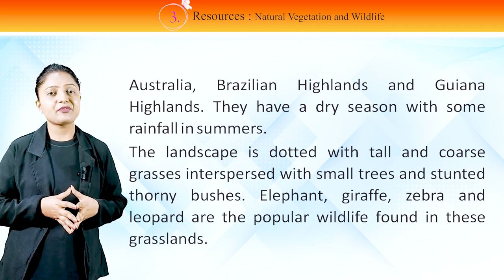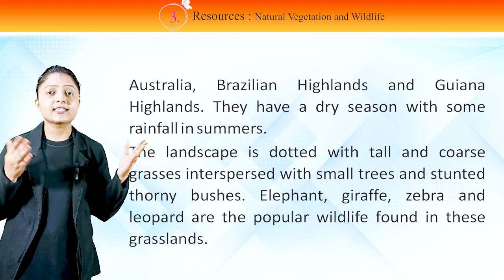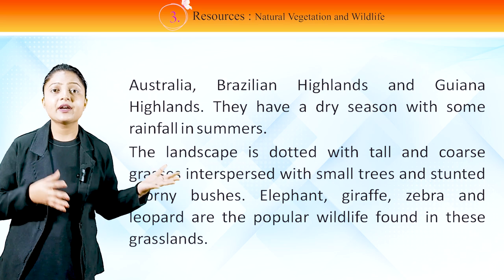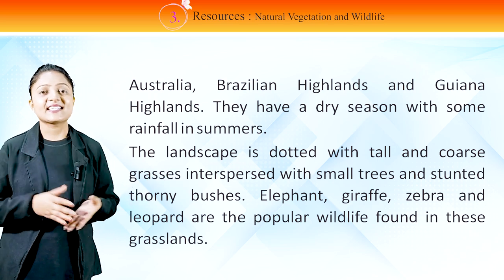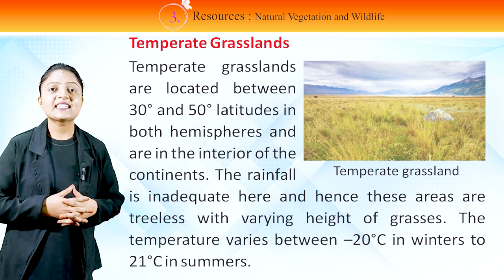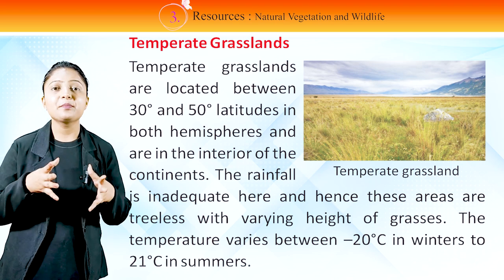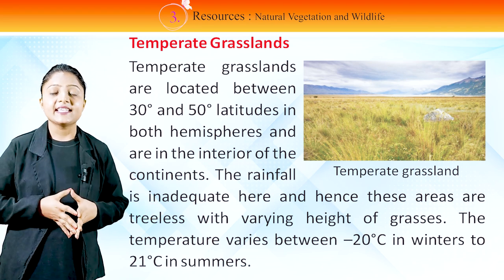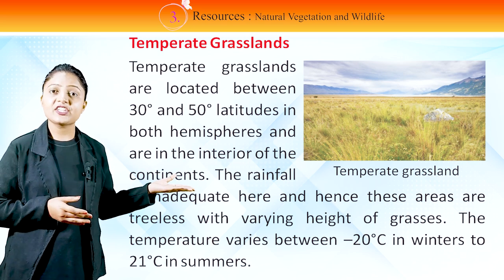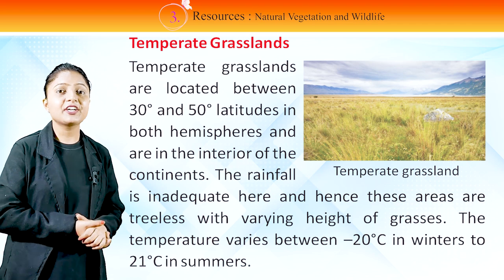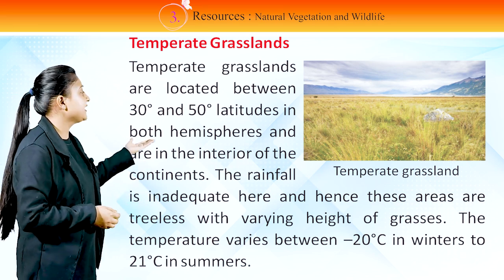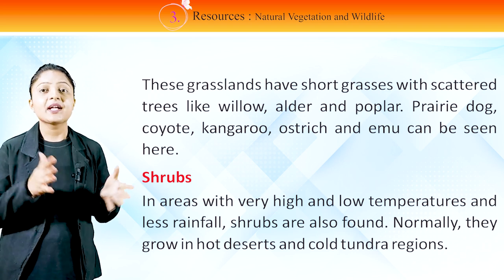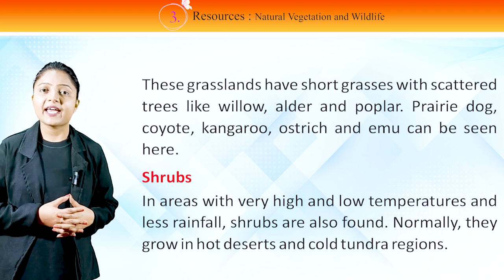Tropical grasslands are also found in Northern Australia, the Brazilian highlands and the Guiana highlands. They have a dry season with some rainfall in summers. The landscape is dotted with tall and coarse grasses interspersed with small trees and stunted thorny bushes. Elephant, giraffe, zebra and leopard are the popular wildlife found in these grasslands. Temperate grasslands are located between 30° to 50° latitudes in both hemispheres and are in the interior of the continents. The rainfall is inadequate and hence these areas are treeless with varying height of grasses. The temperature varies between minus 20°C in winter to 21°C in summer. In this image, you can see temperate grasslands. These grasslands have short grasses with scattered trees like willow, alder and poplar. Prairie dog, coyote, kangaroo, ostrich and emu can be seen here.